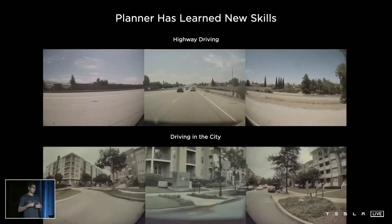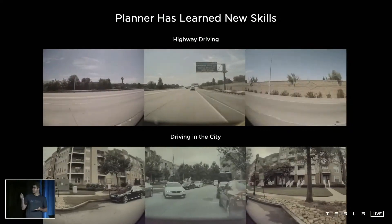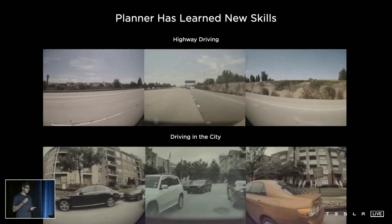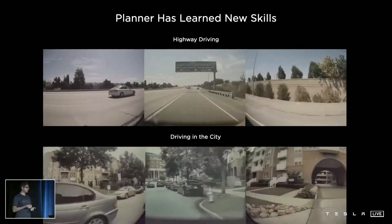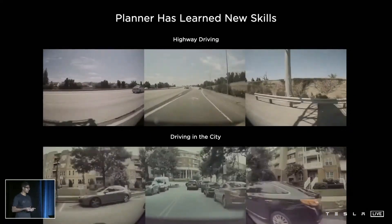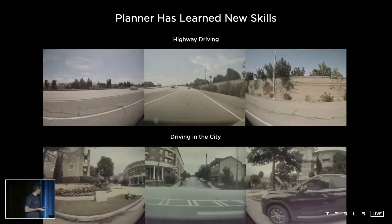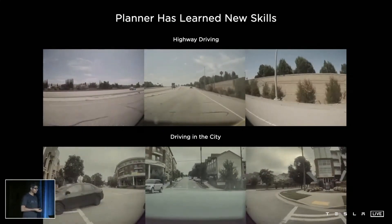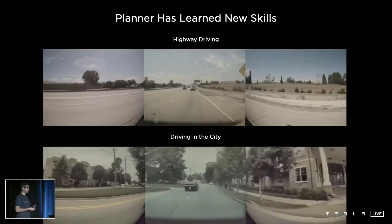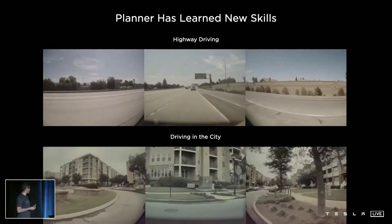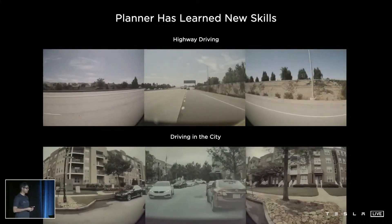Even back in 2019, our planner was a pretty capable driver. It was able to stay in the lanes, make lane changes as necessary, and take exits off the highway. But city driving is much more complicated. There are rarely structured lanes, and vehicles do much more free-form driving — the car has to respond to crossing vehicles and pedestrians doing unexpected things.